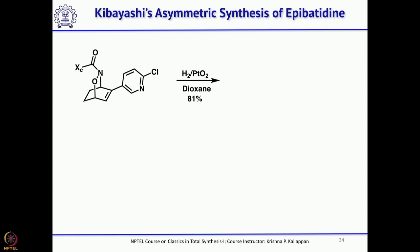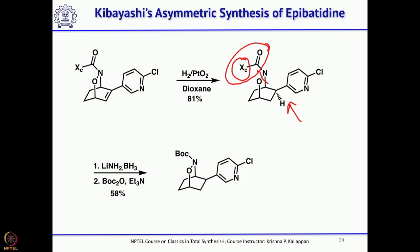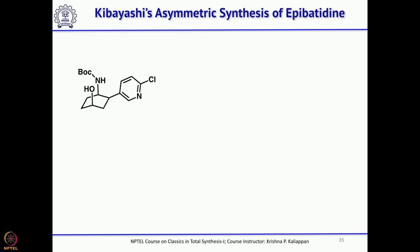The double bond was first reduced under hydrogenation conditions to establish the stereochemistry at that carbon. Next, the N-O bond was cleaved — prior to cleavage, the chiral auxiliary was removed using lithium aminoborane, and the free NH was protected as NHBoc. The N-O bond was then cleaved using molybdenum hexacarbonyl to give the corresponding amino alcohol where the amine is protected as a Boc derivative.